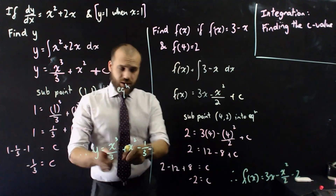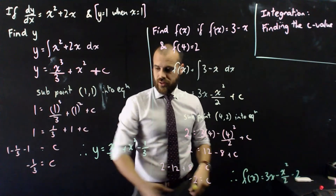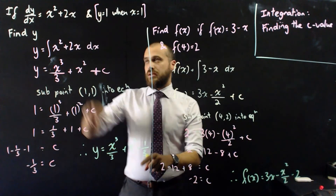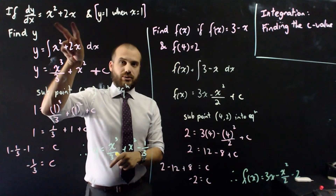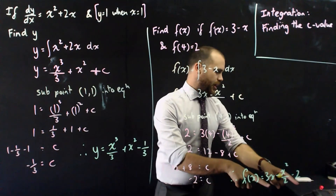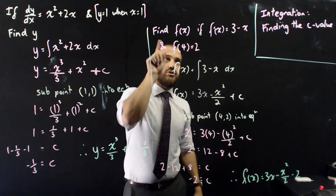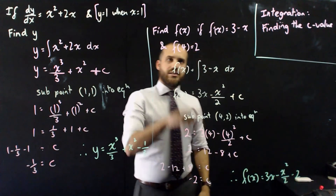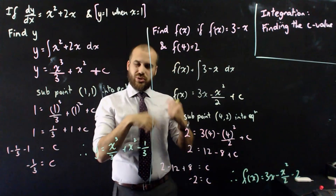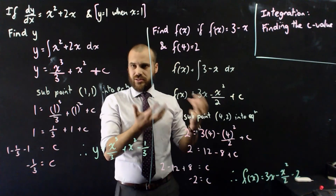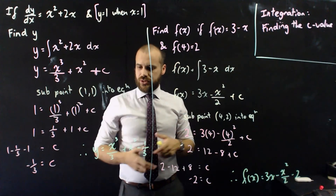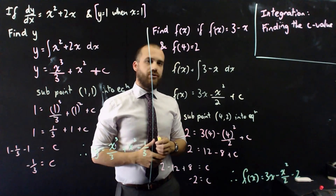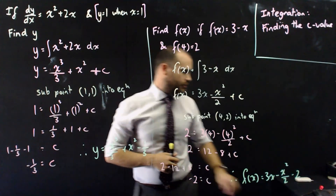You could check your work by finding the derivative of your answer and making sure it equals the original derivative, or by substituting the given point into your answer and confirming it works. That's it — finding the c value.